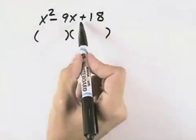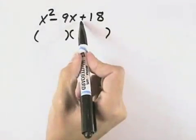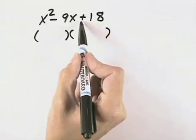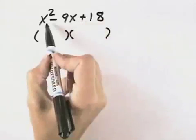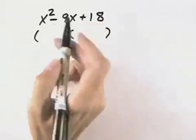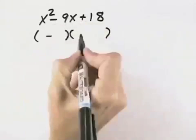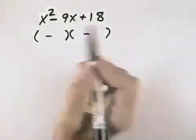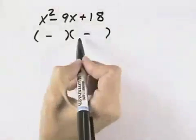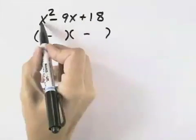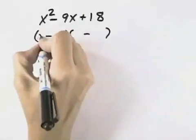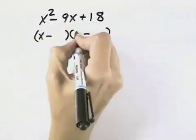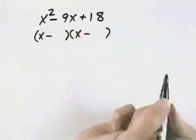Now, because the last symbol is positive, that means both signs will be the same. Because the first sign is negative, that means both signs will be negative. We know that the first terms multiplied together must give us x squared, so that must be an x in each space.